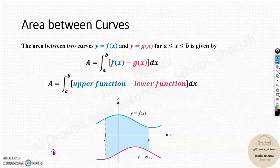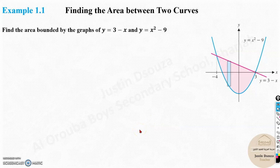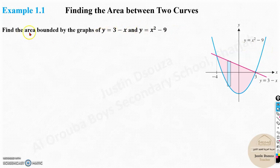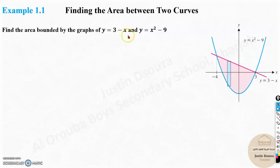Please stay tuned for the coming videos — we will start solving problems using this formula. The first example problem is very simple: just find the area between two curves, and the graphs are given. Now, the equations are also mentioned. Find the area bounded by the graphs y equals 3 minus x and y equals x squared minus 9. In coming problems, you won't have this graph, so it is very important to know the basic knowledge of graph shapes.